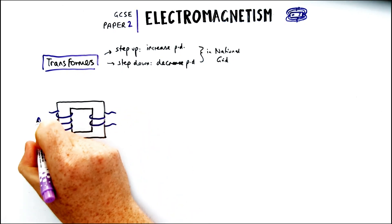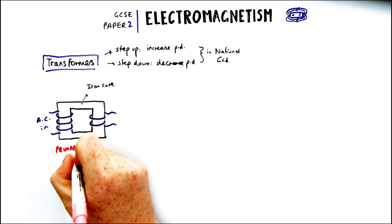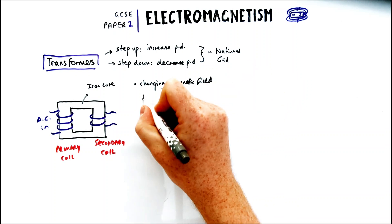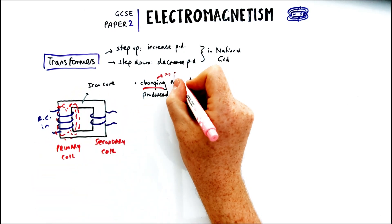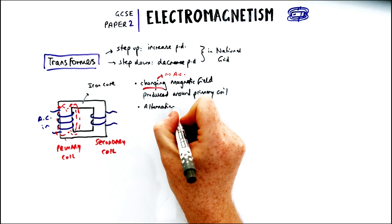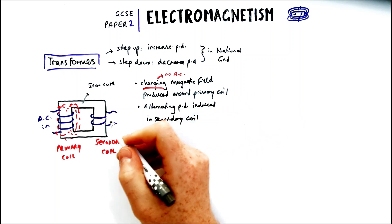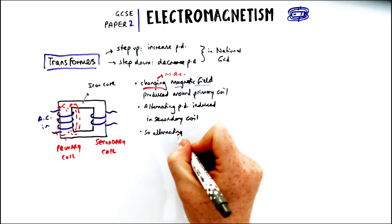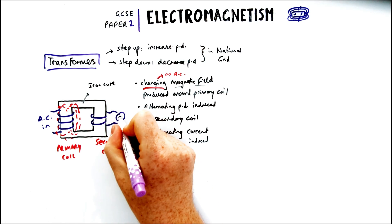Transformers have a square iron core with coils of wire wrapped around each side — the primary coil and the secondary coil. On the primary coil you supply an alternating current, which produces a changing magnetic field around the primary coil. Because it's changing and close enough to the secondary coil, an alternating potential difference is induced across the secondary coil without the current actually flowing through the iron core. This happens due to the generator effect: a changing magnetic field around a conductor induces a potential difference.